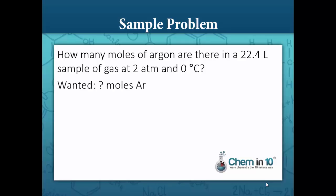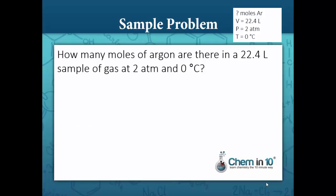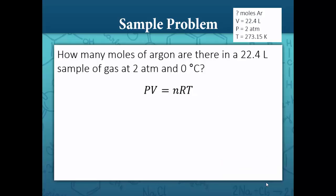So we want to know the number of moles of argon. We're given a volume of 22.4 liters, a pressure of 2 atmospheres, and a temperature of 0 degrees Celsius. Because this is a gas law problem, we always have to convert our Celsius to Kelvin, so 0 degrees Celsius is equal to 273.15 Kelvin.